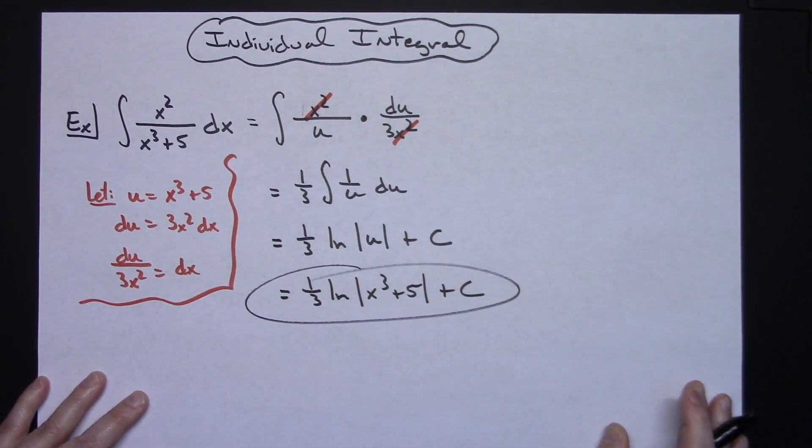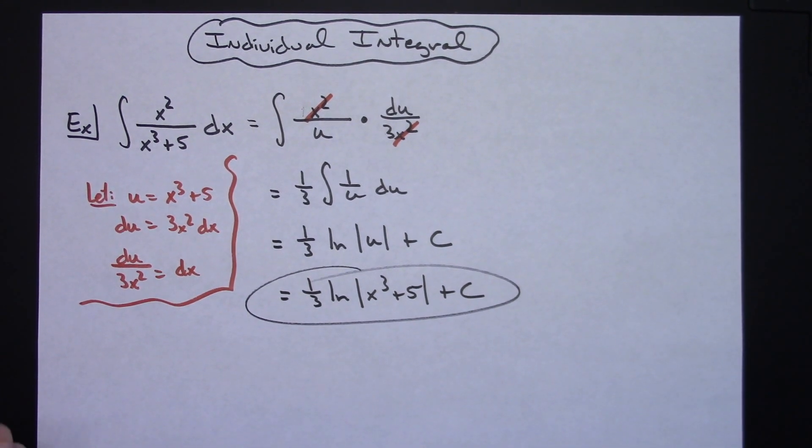One-third natural log absolute value x to the third plus 5 and then plus C. So definitely a straightforward u-substitution integral, intended for that beginning Calc 1 student who just needs to see lots of examples.